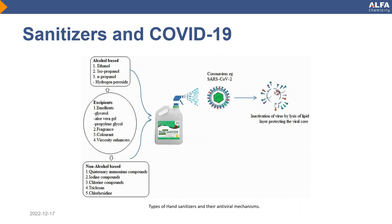Ethanol-containing hand sanitizers are applied to the skin and can effectively reduce the bioburden of many microbe types. Non-alcohol based hand sanitizers are constituted of active antimicrobial compounds such as povidone iodine, benzalkonium chloride, triclocarban, and triclosan, achieving the prolonged effect.